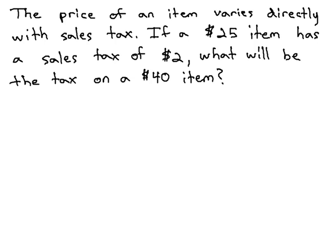In order to answer this question, we must first set up a formula for the relationship using the type of variation. This problem tells us that it varies directly. Directly means we're going to divide the two values, the price of the item and the sales tax.